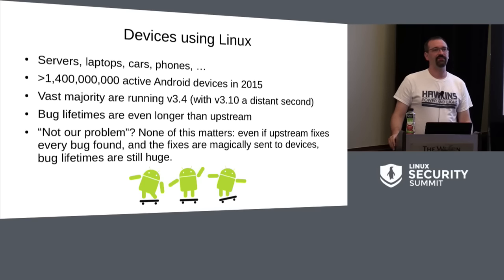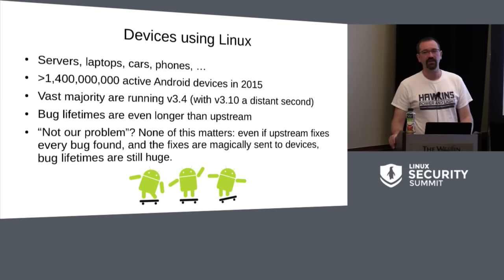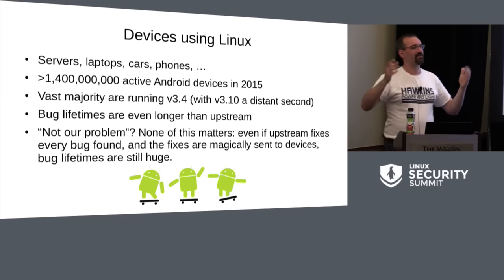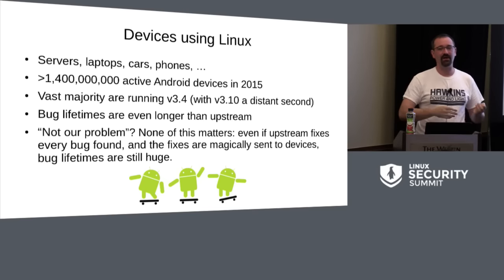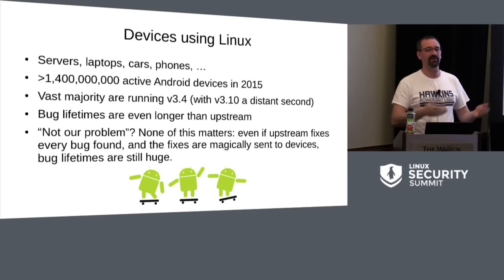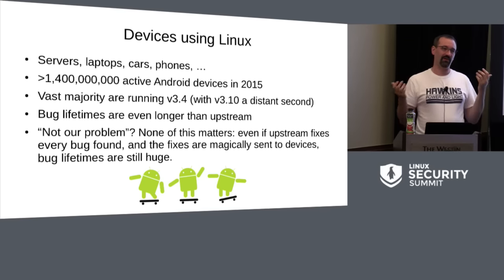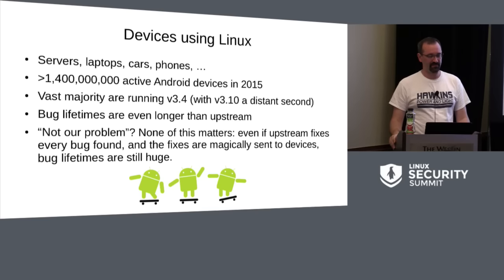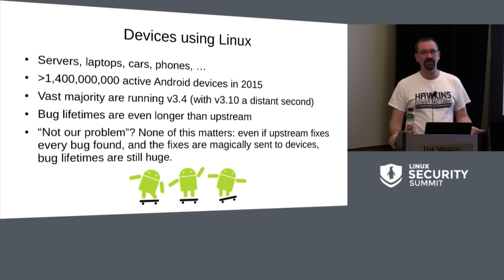I hear a lot of blame-shifting about where this problem needs to be solved. Upstream developers say they've done everything they can — the bug is fixed, it's on someone else to roll it out. Vendors say they can't get it out to devices because they're not coming online. The idea is to build in protection technologies from the start so that when a bug comes along, we don't really care.